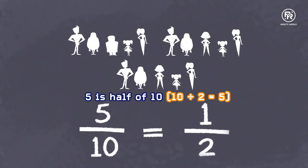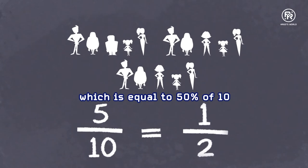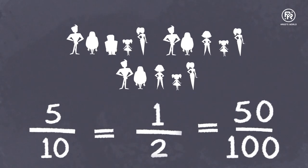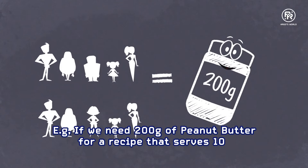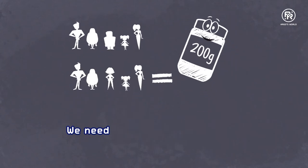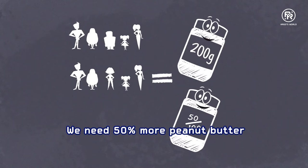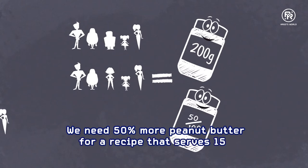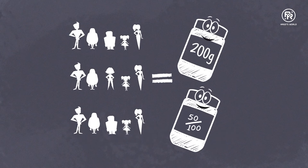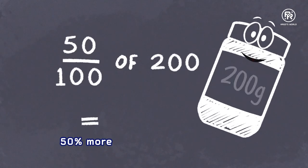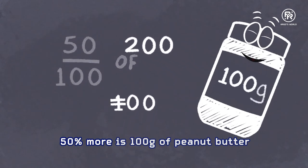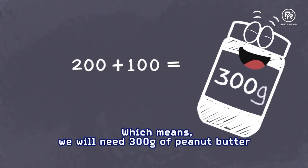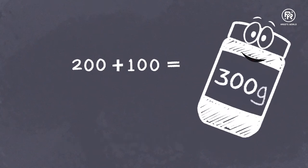5 is half of 10, which equals 50% of 10. Which means that if we need 200 grams of peanut butter for a recipe that serves 10, we'll need 50% more peanut butter for a recipe that serves 15. And 50% more is 100 grams of peanut butter, which means we'll need 300 grams total!